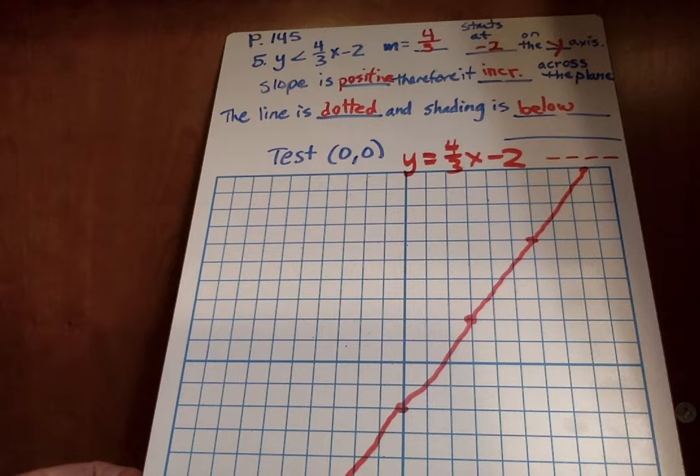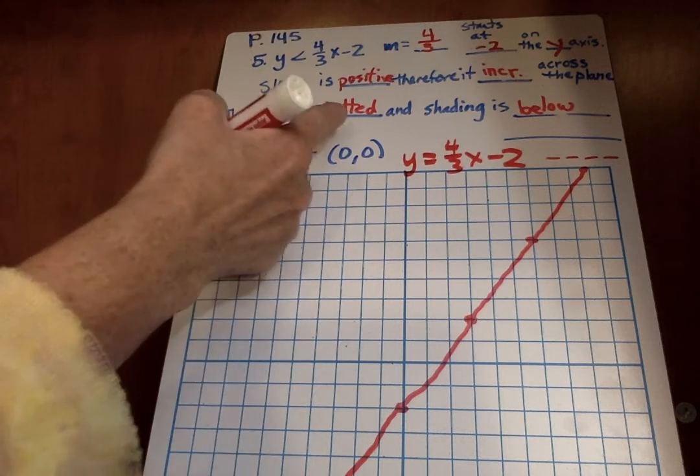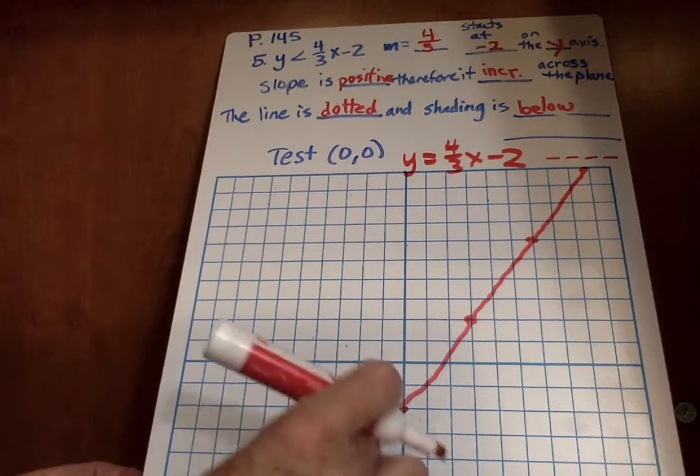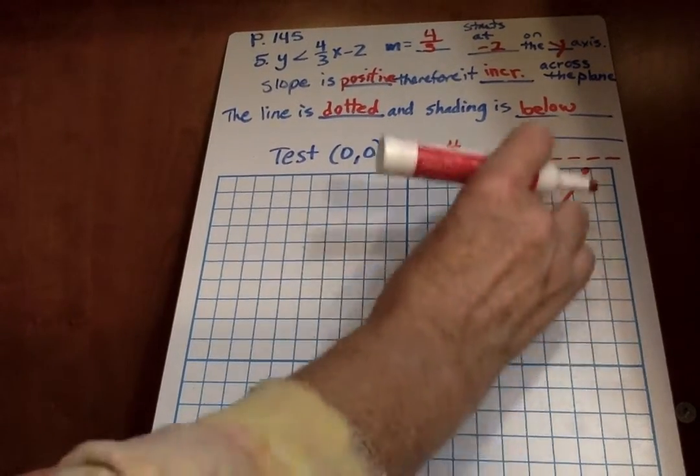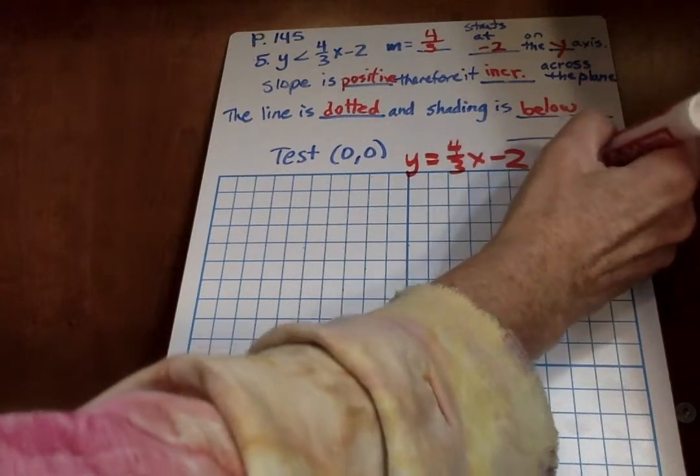Supposed to be a dotted line, not a solid line. Now I can do it easily and make it dotted line like that. Might not be as easy for you.